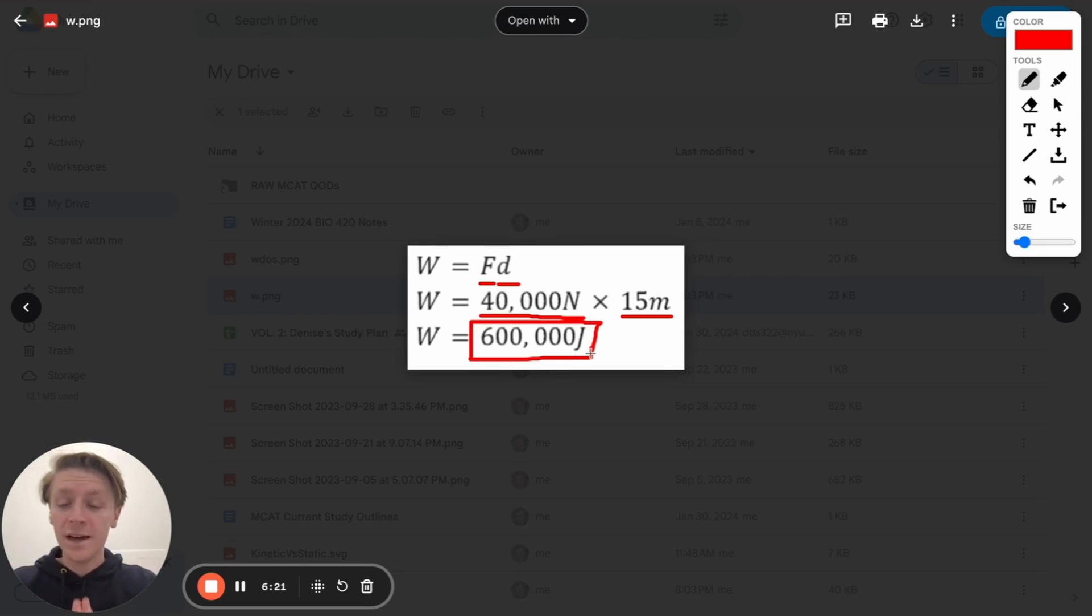And remember, when in doubt, you can check your units. We know that newtons are kilograms meters over seconds squared. So if we multiply that by meters, we have kilogram meter squared over second squared, which is joules. So that's another trick that you can use that's up your sleeve.